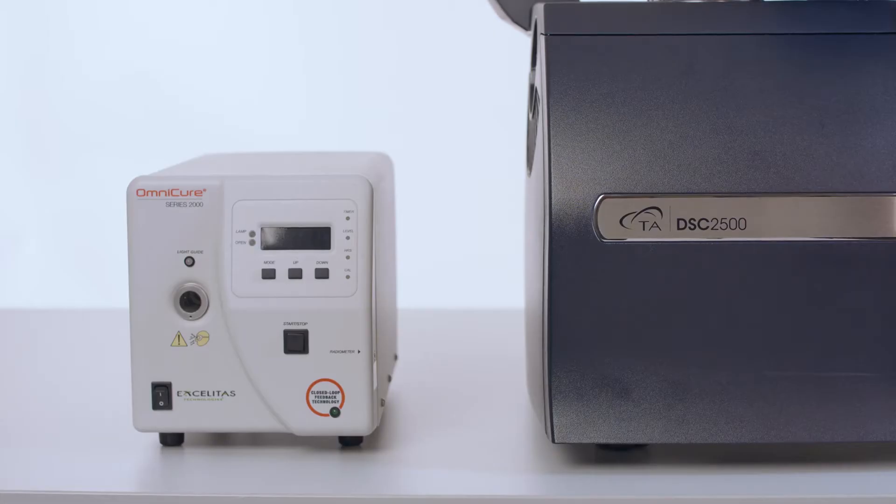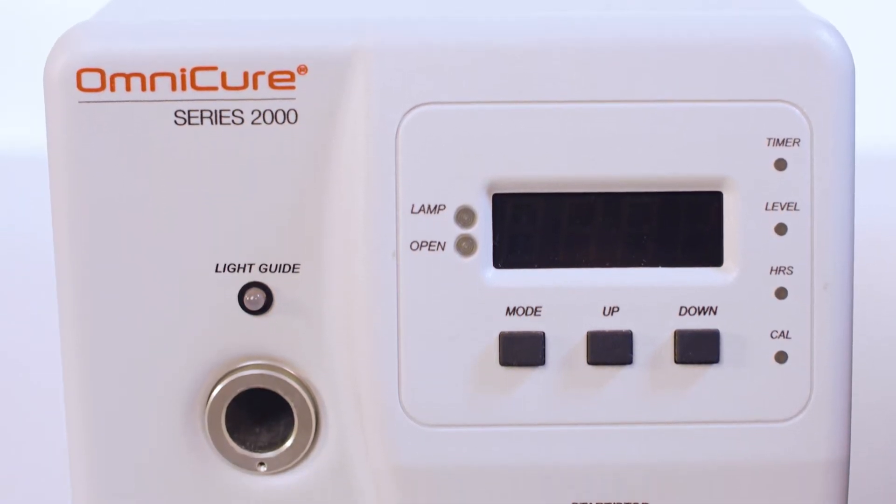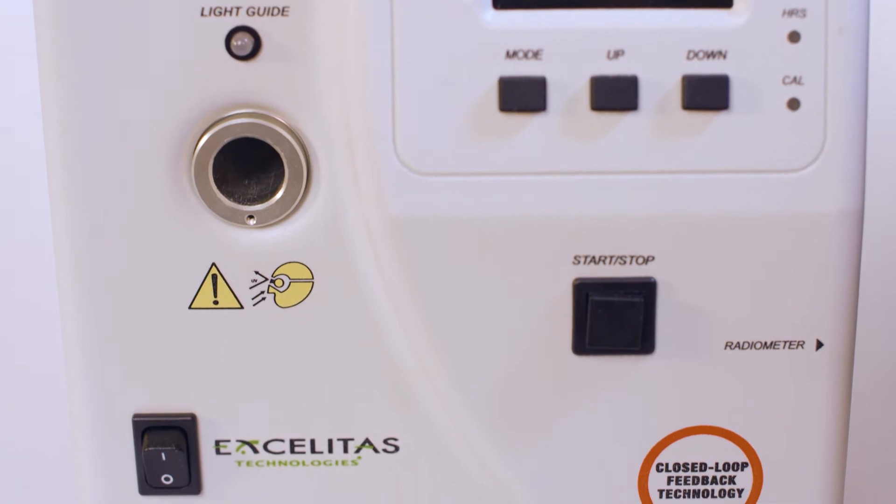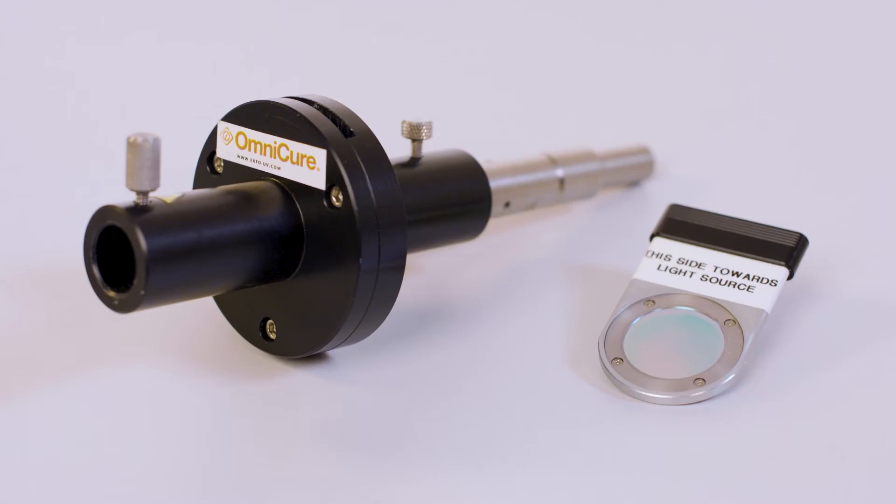A broadband filter supplied with the instrument covers 320 to 500 nanometer and is suitable for most UV and visible PCA studies. Additional filters are available for use with the PCA UV external filter adapter accessory.